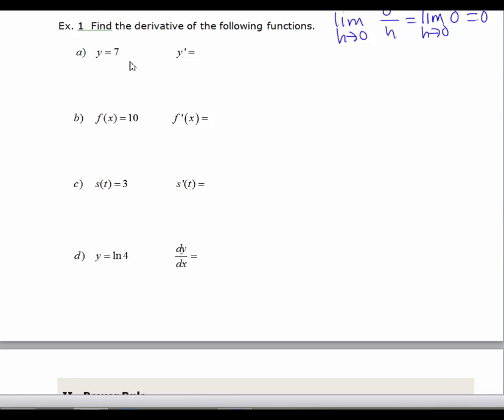Let's just look at some examples. These are all very easy because they're all the derivative of a constant, but I'm just trying to get you to play around with the different notations and get used to those. If y equals 7, y' equals 0. The derivative of a constant is 0. If f(x) equals 10, f'(x) equals 0.